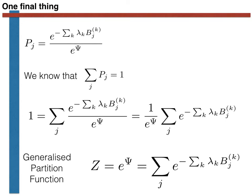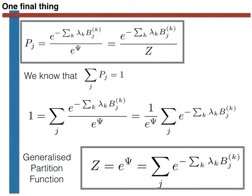As we shall see in subsequent videos, the partition function is really the central quantity in statistical mechanics. To summarize, we have arrived at two key results: the first gives the probability of being in microstate j, and the second is the expression for the generalized partition function Z that appears in the denominator of that probability. We derived these expressions by finding the minimum value of the information subject to constraints, using the method of Lagrange multipliers. Hopefully you did not find the mathematics too difficult. If you did, please watch the video a second time. Thank you for your attention.